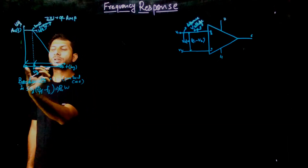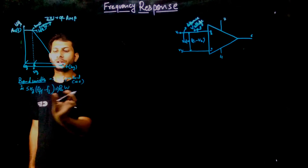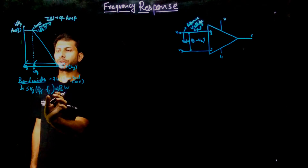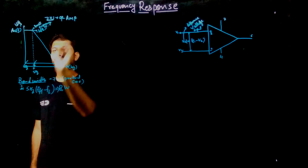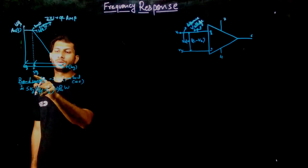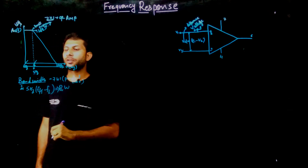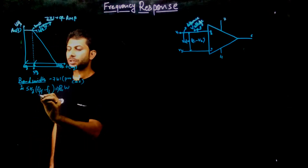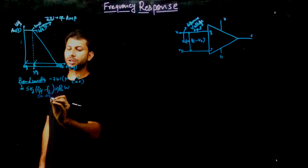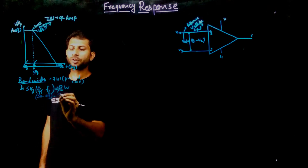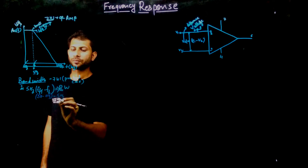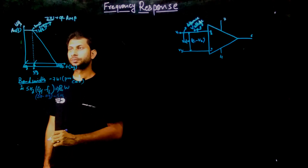That frequency is known as bandwidth. If we take higher frequency minus lower frequency for the 741 IC, we have the break frequency at the point where frequency is five hertz — that means five hertz minus zero hertz — so the bandwidth for this 741 IC is five hertz.